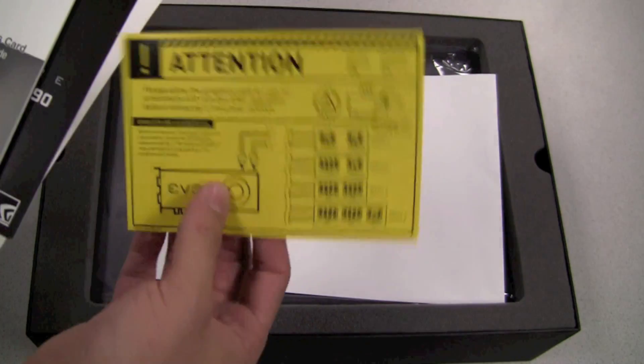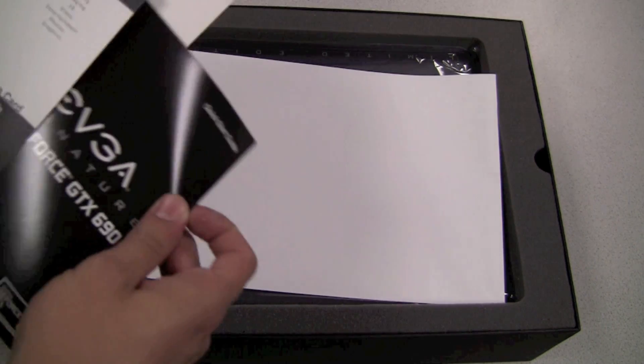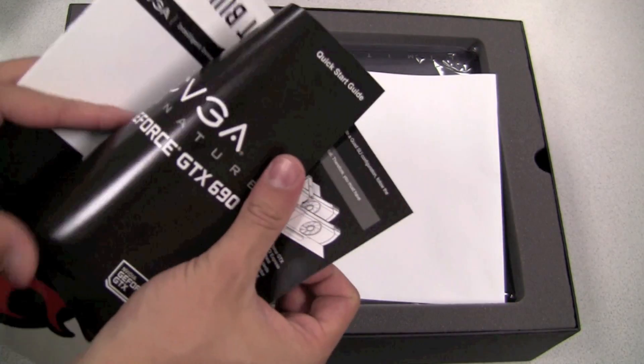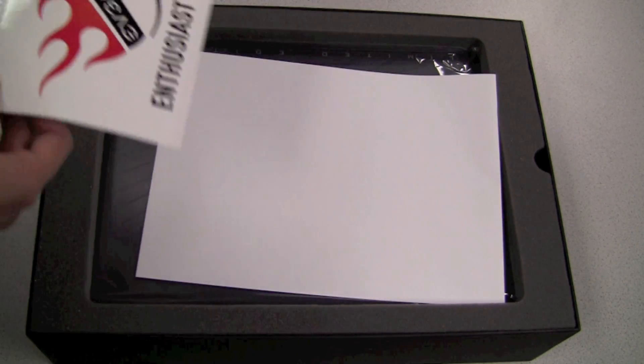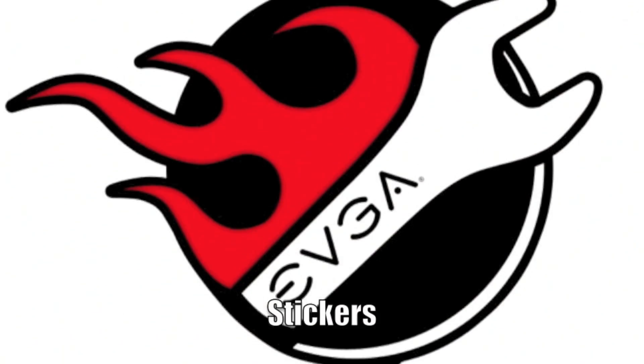Also we have a little note here about some of the power supply requirements for the 690, a quick installation guide that helps you get up and running and tells you how to configure Quattro SLI, and an EVGA sticker set.